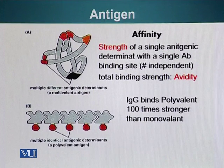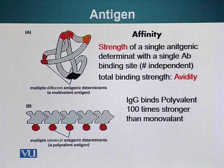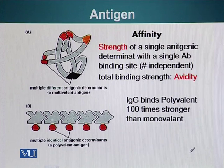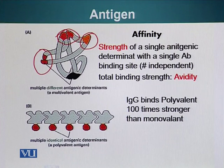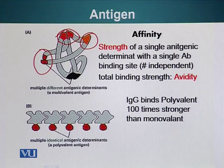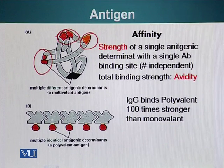Antibodies bind antigens. The entities recognized by antibodies are referred to as antigens. The portions of an antigen that bind to the antibody are called antigenic determinants. Antigenic determinants could be made up of a single protein or two or more proteins. In certain antigens, the antigenic determinant could be a repeating unit, so an antigen can have multiple identical antigenic determinants — such antigens are called polyvalent antigens.